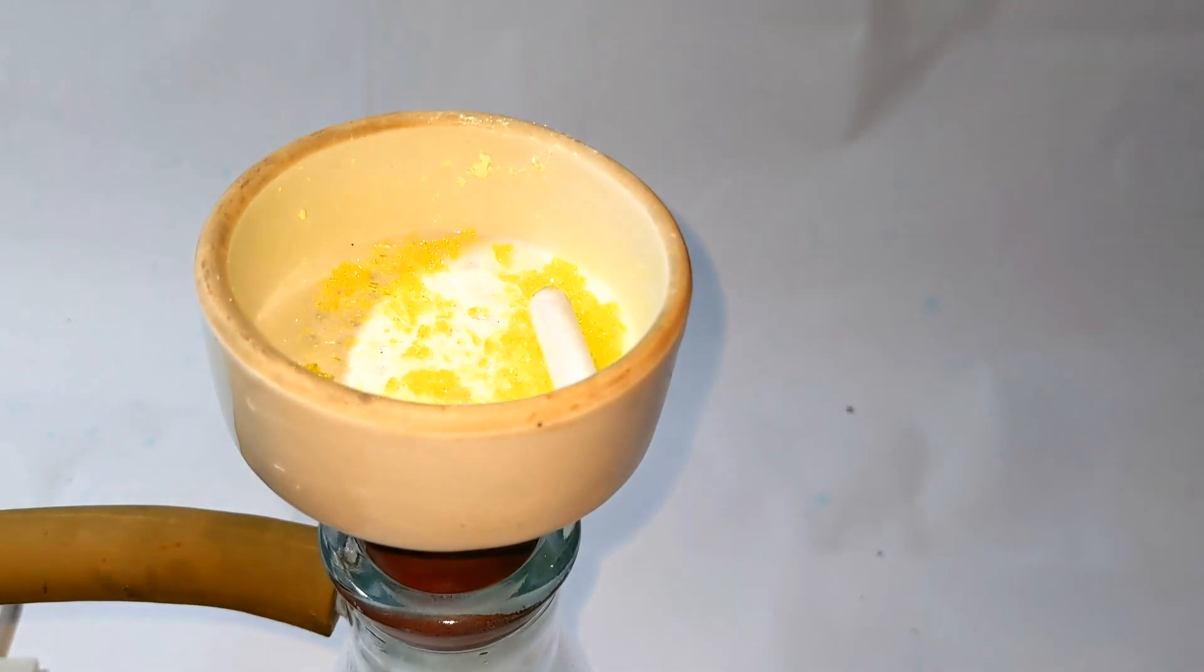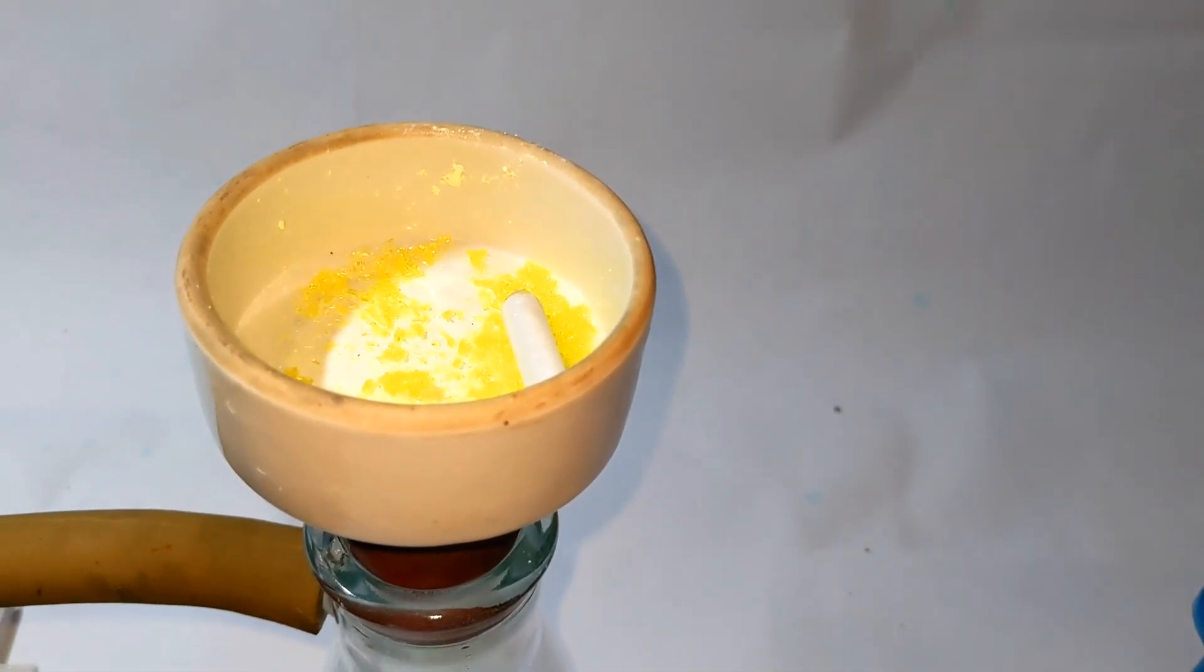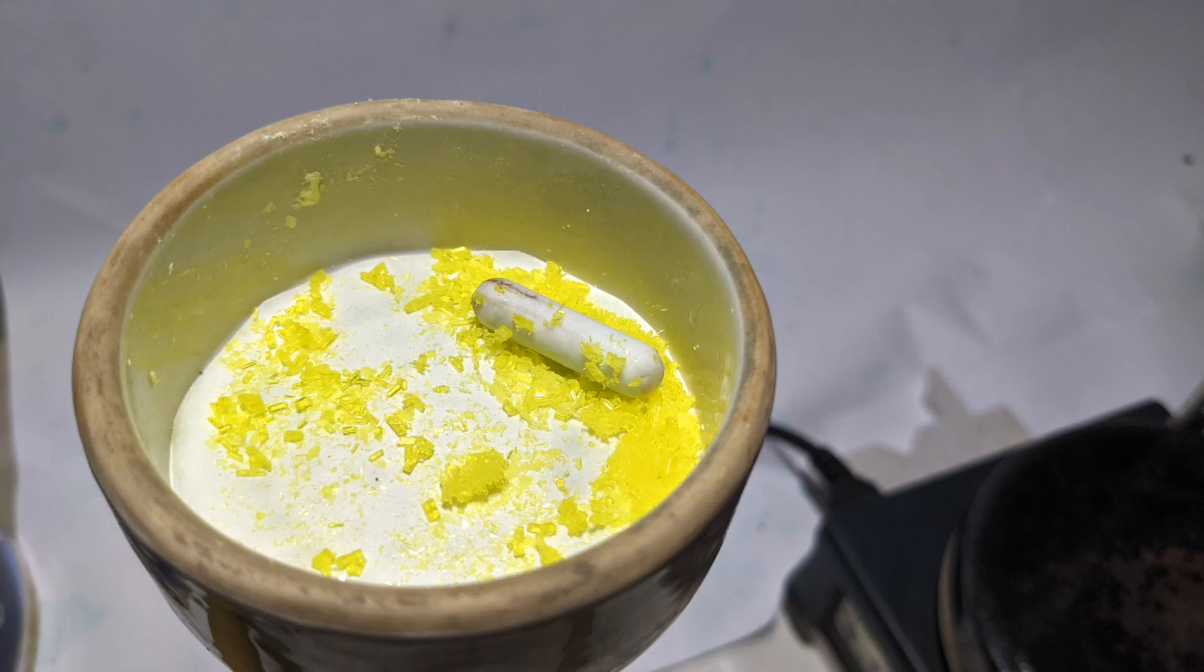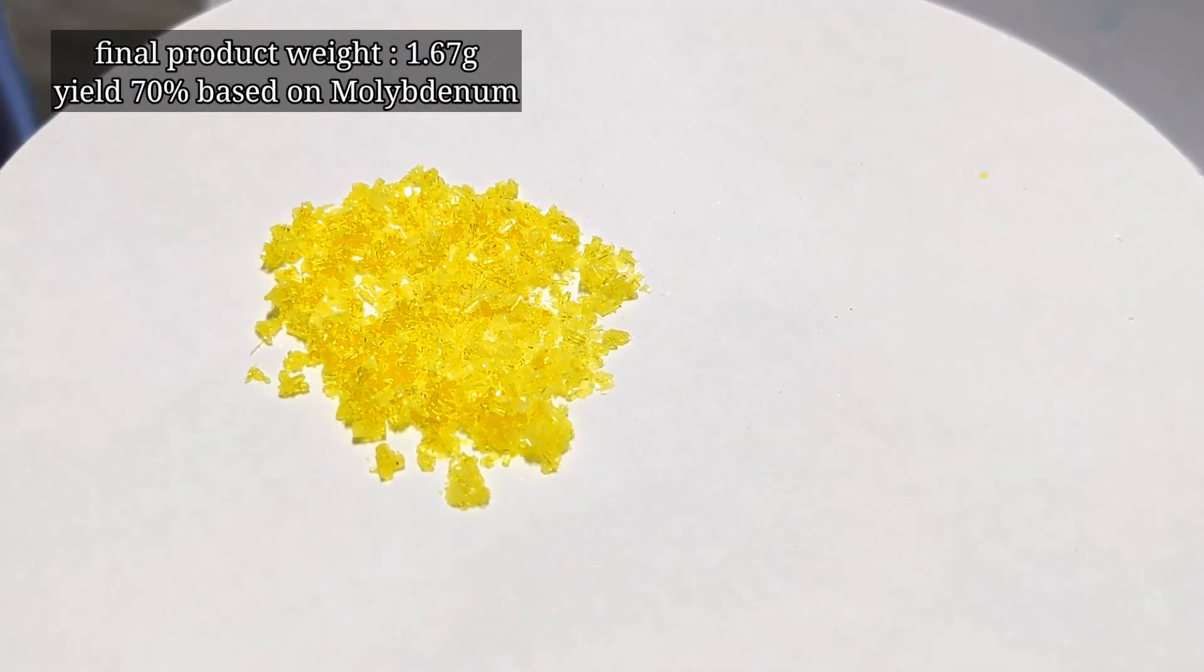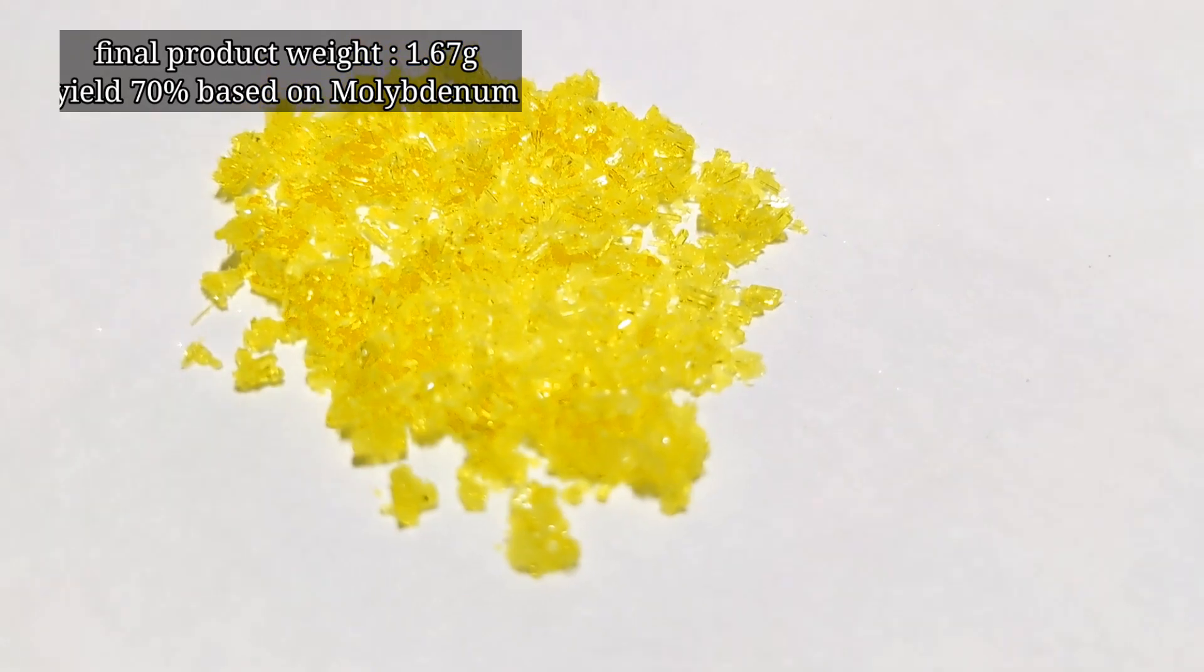Those crystals were then vacuum filtered and then the vacuum was turned on to dry the product. And here is the dry product. We obtained 1.67 grams of the recrystallized tetrabutylammonium hexamolybdate.